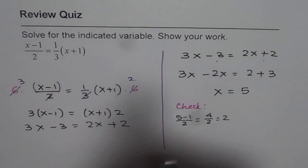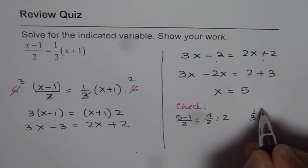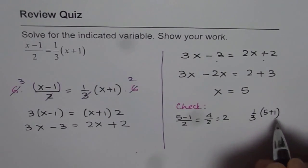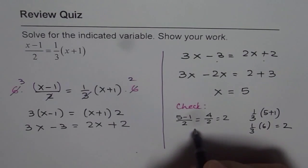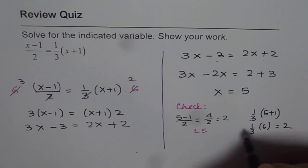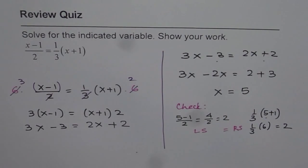If I do it on the right side I get 1 third of 5 plus 1, that is 1 third of 6 which is also equals to 2. So you can see left side equals the right side for the value 5. So 5 is the solution for our given equation. I hope that helps. Thank you.